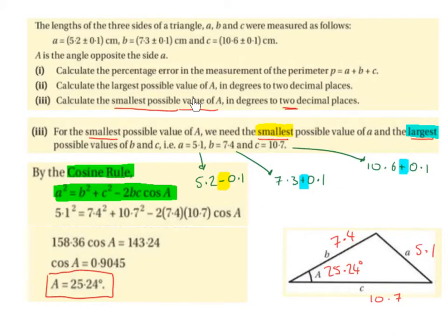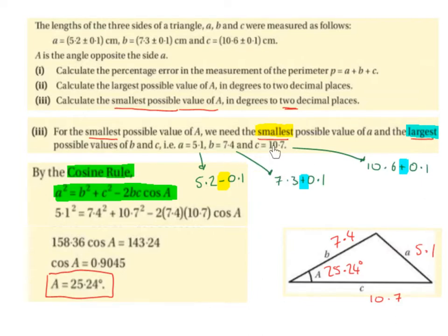Part 3: Calculate the smallest possible value of angle A in degrees to two decimal places. For the smallest angle A, we need the smallest possible side A and the largest possible B and C: A = 5.1, B = 7.4, C = 10.7. Using the cosine rule and substituting, we get cos A = 0.9045, giving A = 25.24 degrees. So the smallest possible value of angle A is 25.24 degrees.